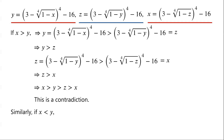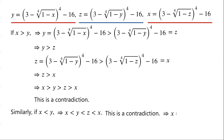Similarly, if x is less than y, then we have y is less than z, and z is less than x. That is, x is less than x. This is a contradiction. So x cannot be less than y. x cannot be greater than y and cannot be less than y. So x must be equal to y.